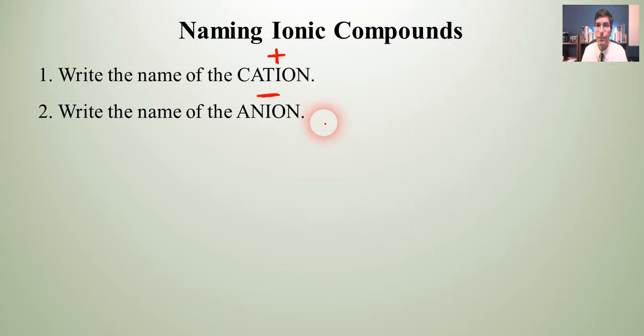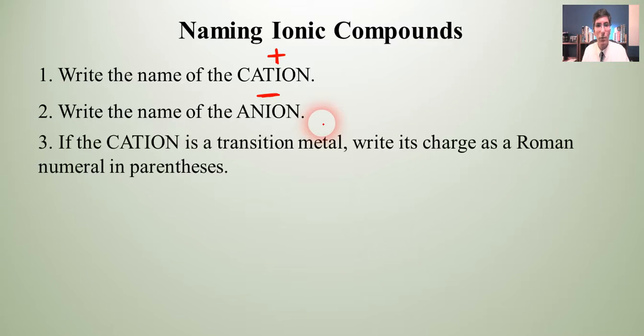First of all, you want to write the name of the cation. And in case you've forgotten from the last lesson, cations are always positive and they're always written as the first part of the name or the first part of a formula. Next, you want to write the name of the anion. And of course those are always negative and they're always written as the last or the second part of a name or a formula in chemistry.